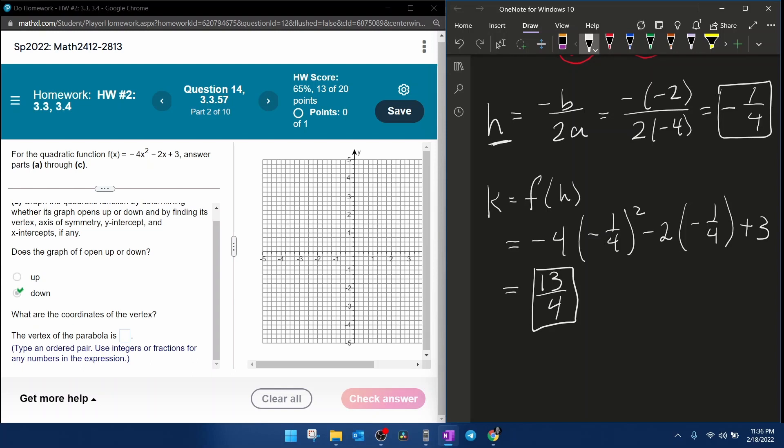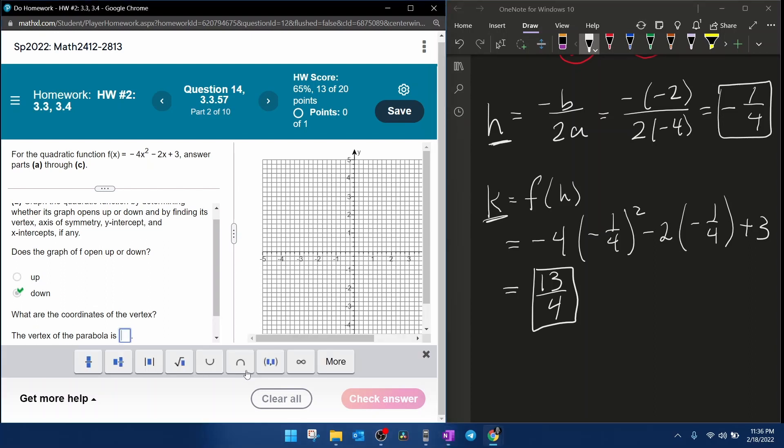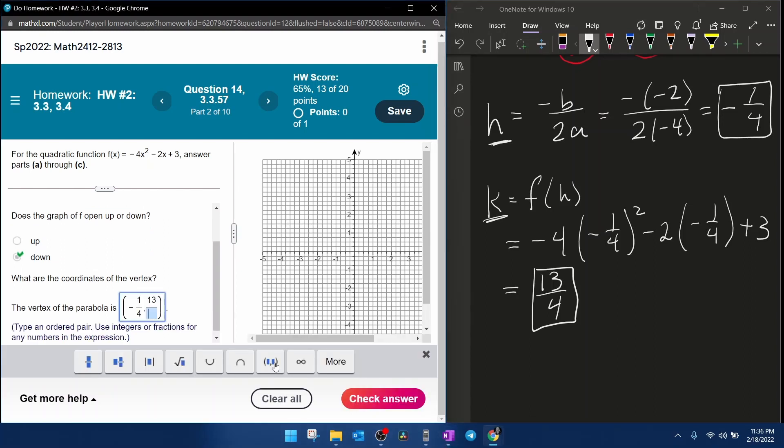is 13 fourths. And if you remember, the ordered pair for the vertex is h, k, which in this case is going to be negative 1 fourth, 13 fourths.